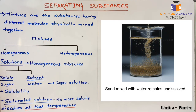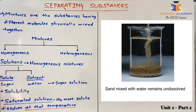Heterogeneous mixtures are the ones in which whenever a substance is added in water, you will be able to see that substance present inside the water as it is insoluble in water. For example, a mixture of sand with water — when sand is added to water, you will be able to identify or see sand particles clearly present in the water.